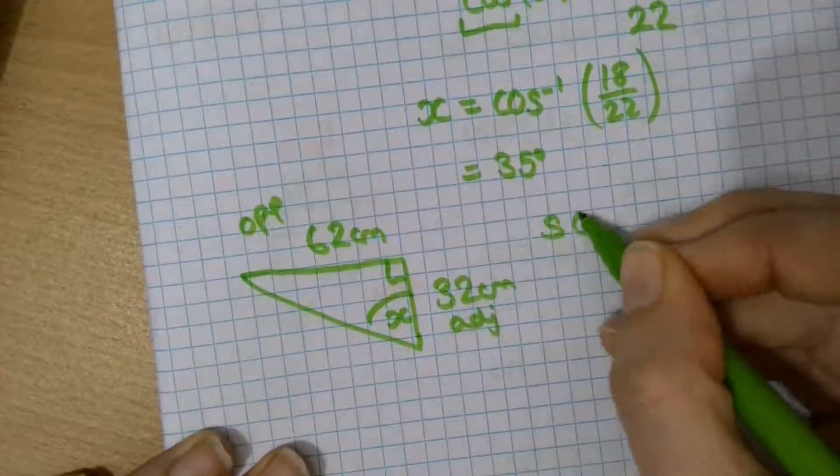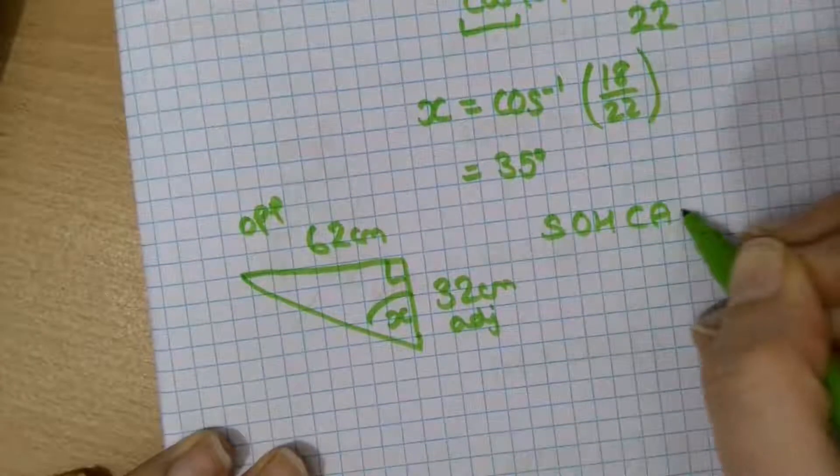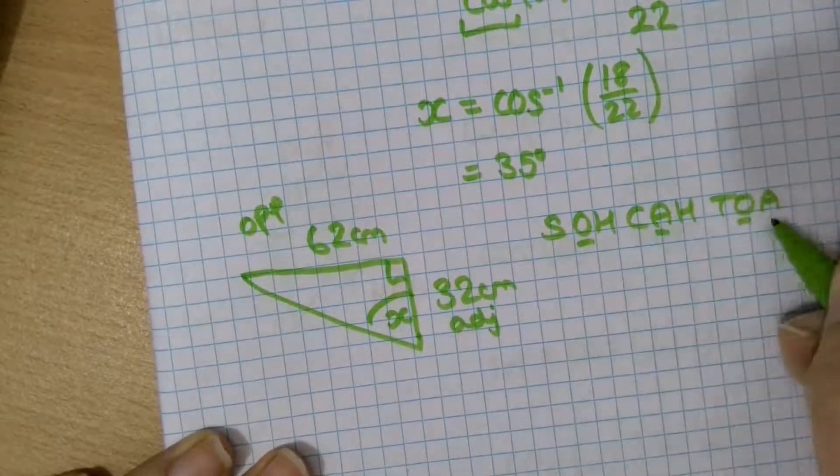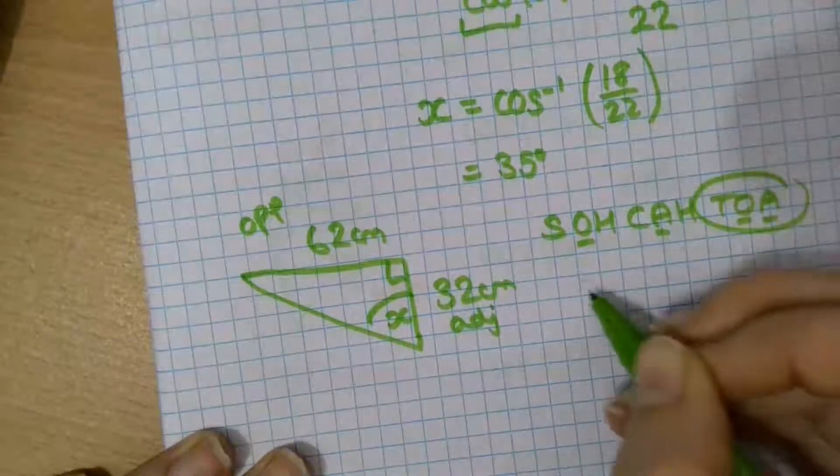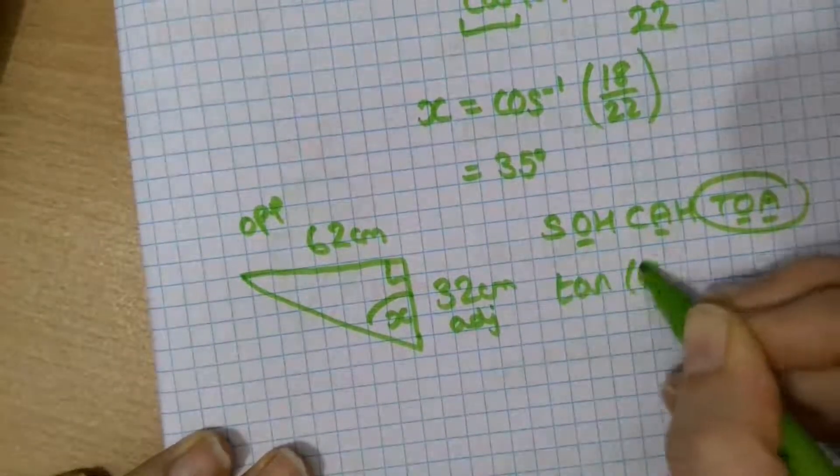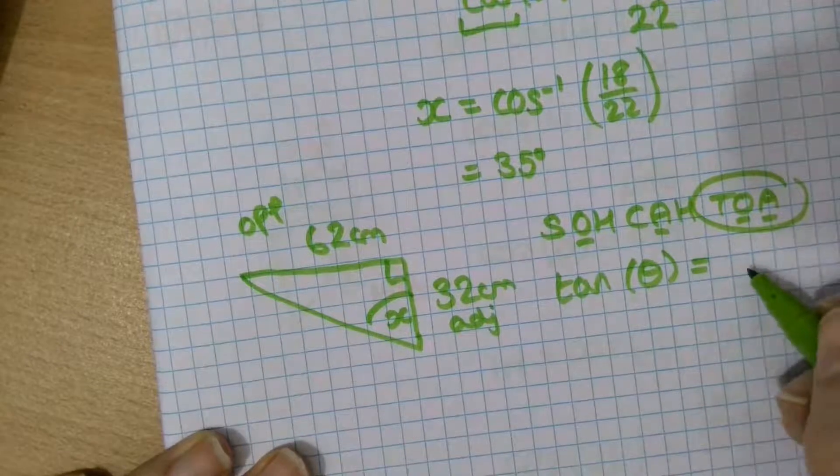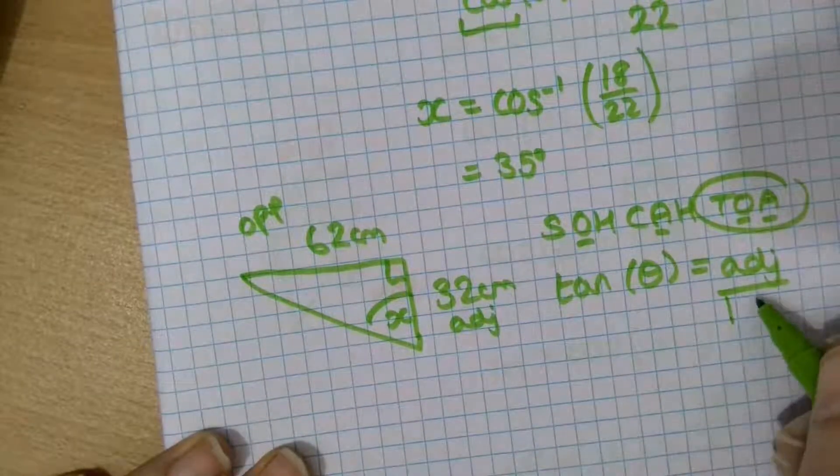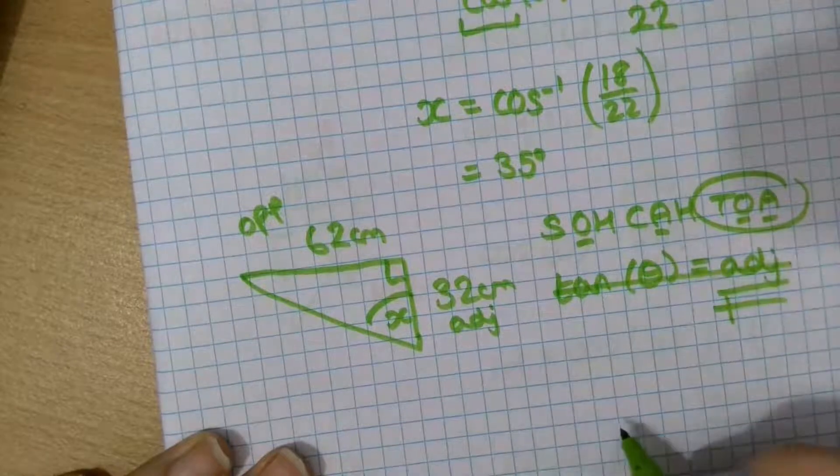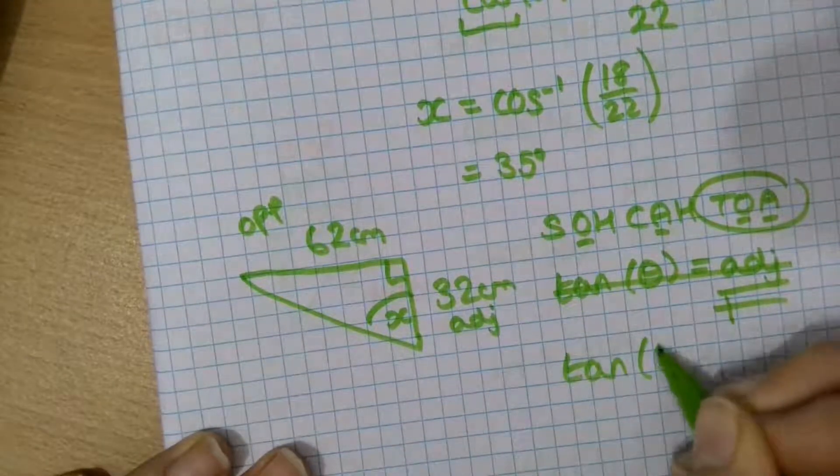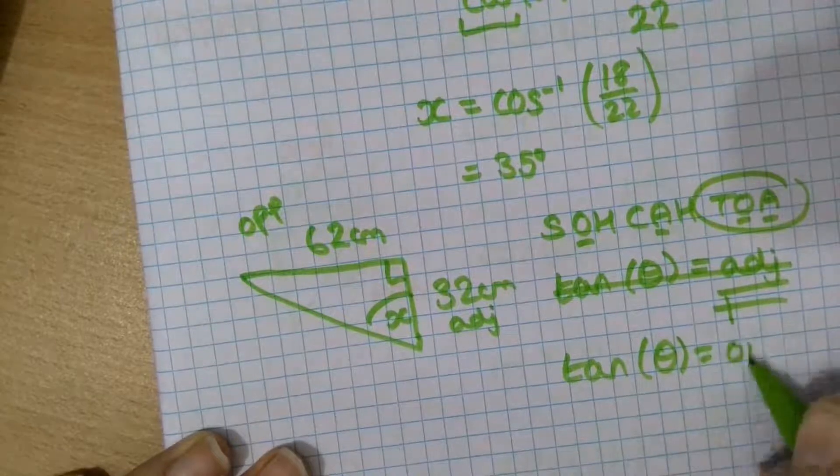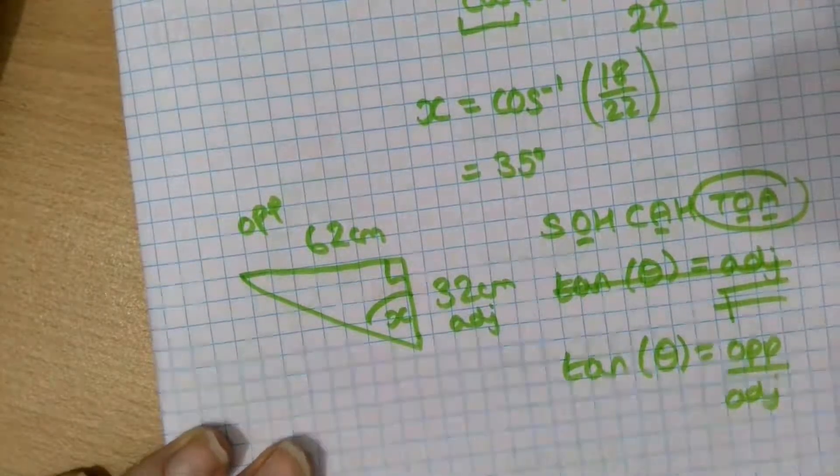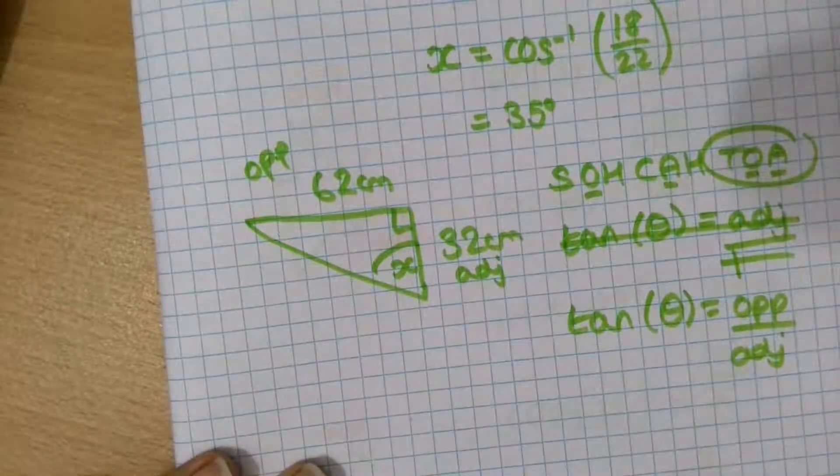When I use Sokotoa, I've got O for my opposite, A for my adjacent, which means I'm using tan. Let's write that formula out. Tan theta equals adjacent over hypotenuse. That's complete. That's complete. Not right. Nearly swore then. Tan theta equals opposite over adjacent. Okay. There's my mind drifting somewhat.